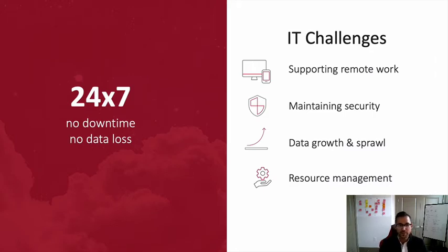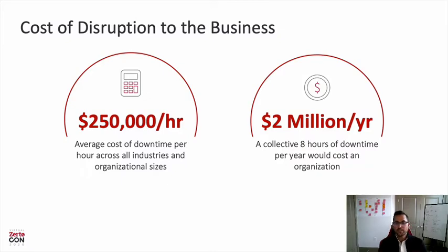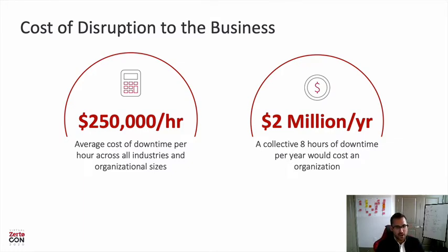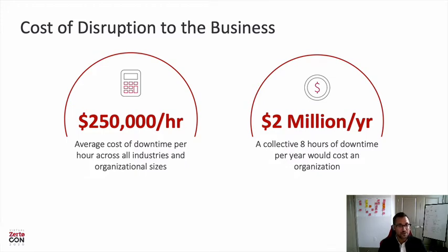The reason we have to continue to reduce downtime and data loss is because of the growing impact and cost of disruption to the business. We sponsored a survey from IDC last year. IDC surveyed over 500 organizations — VPs of IT, directors, administrators, and engineers — and asked questions around data protection, backup, disaster recovery, and cyber attacks. What we found was that the average cost of downtime per hour across all industries was $250,000. With a collective eight hours of downtime per year, that would cost an organization over $2 million annually in unplanned downtime. If you're a large enterprise, that number is a lot larger.